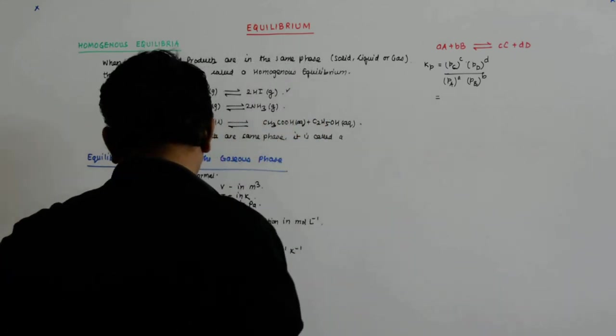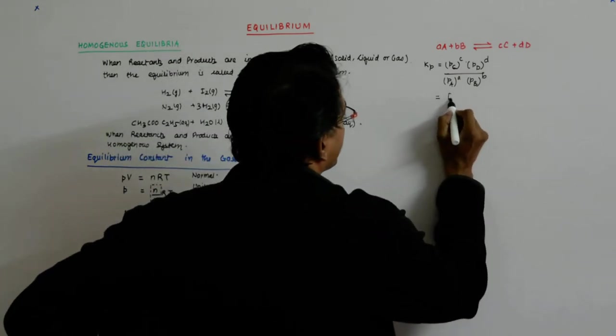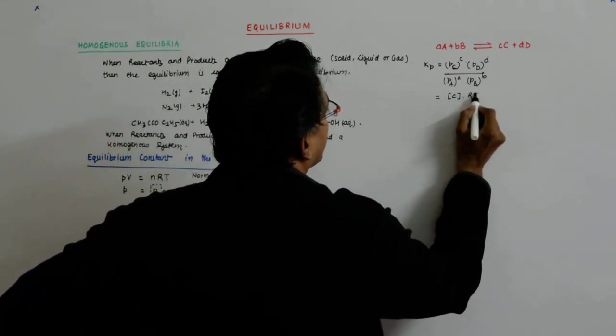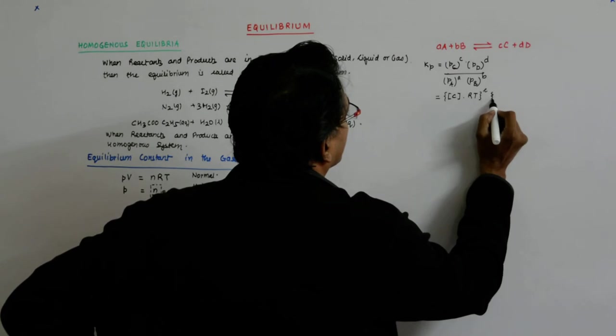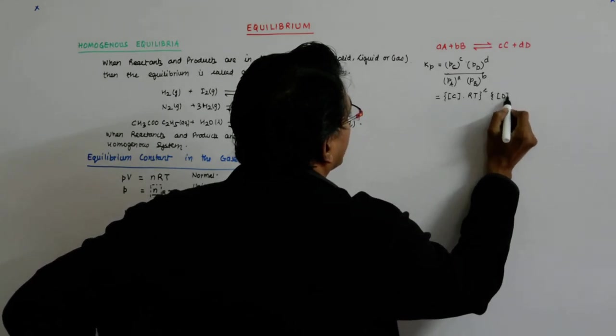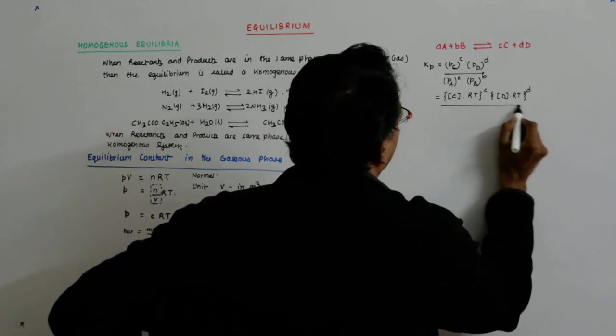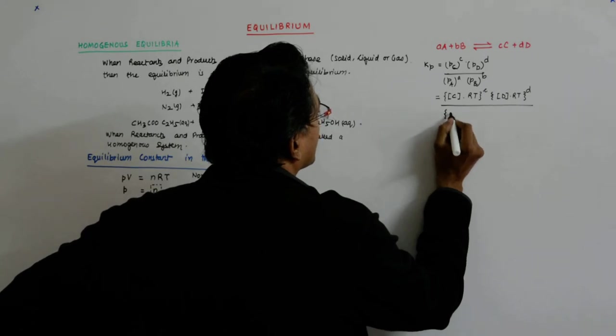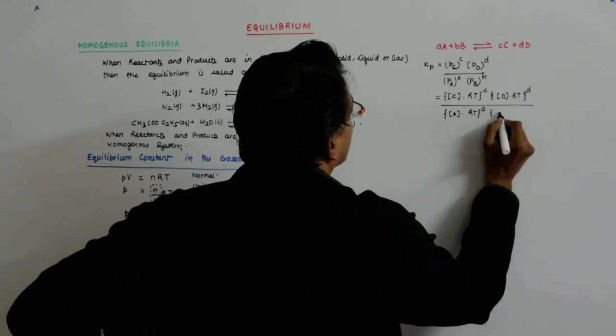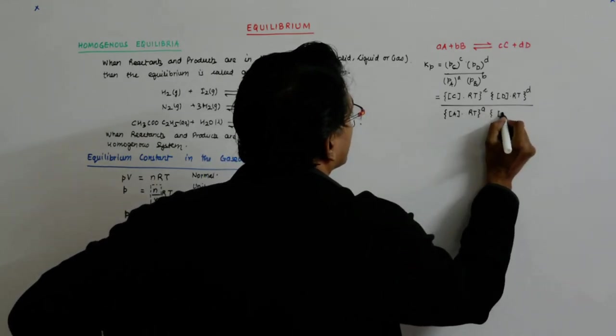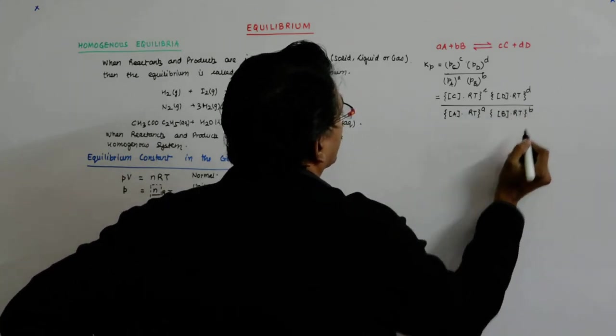Now what is that pressure? Concentration of C times RT to the power c times concentration of D times RT to the power d, divided by concentration of A times RT to the power a times concentration of B times RT to the power b. Right? That simple.